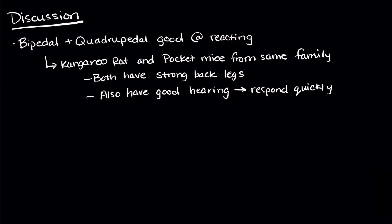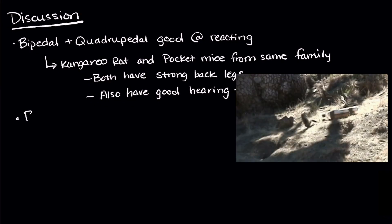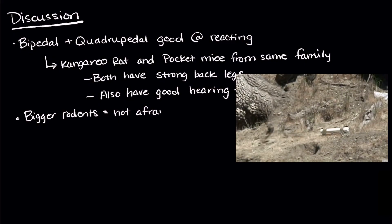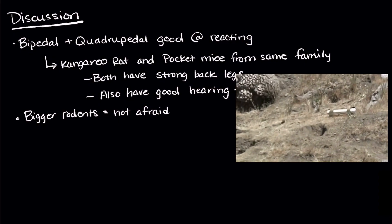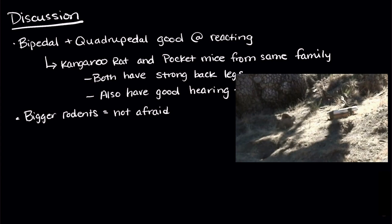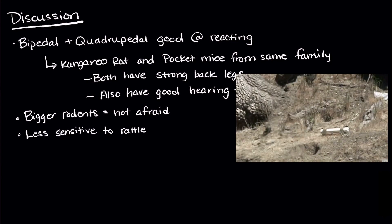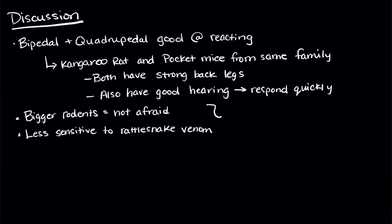So what's the deal with the wood rats and the squirrels? Well, they're bigger and harder to make a meal of, so they might not be as afraid of rattlesnakes as the smaller rodents. Researchers also know that they are less sensitive to rattlesnake venom. So these traits might help them survive instead of their jumping ability.